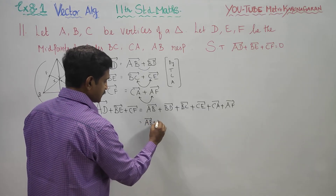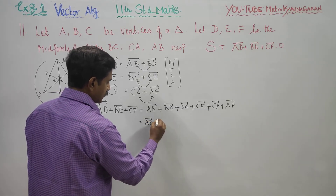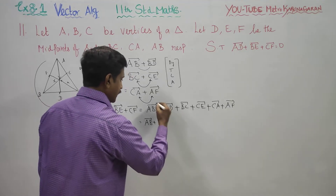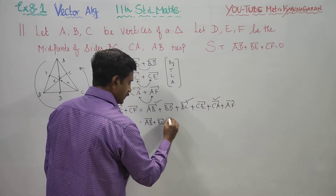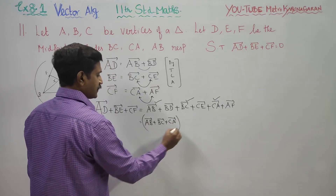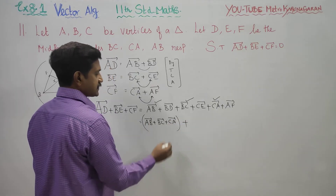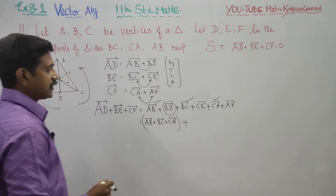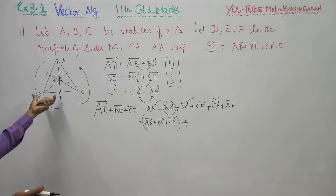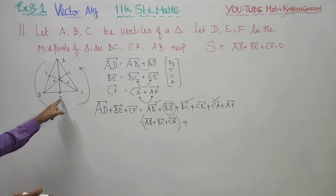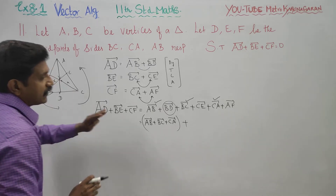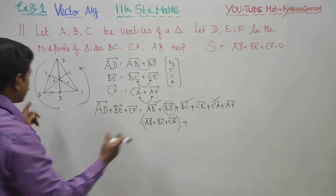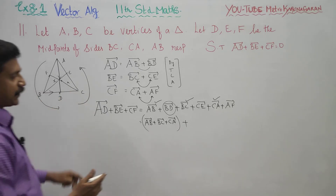Now grouping: AB plus BC plus CA, plus BD plus CE plus AF. Since D, E, F are midpoints, BD is half of BC. The direction of BD is very important — BD is in the same direction as BC.